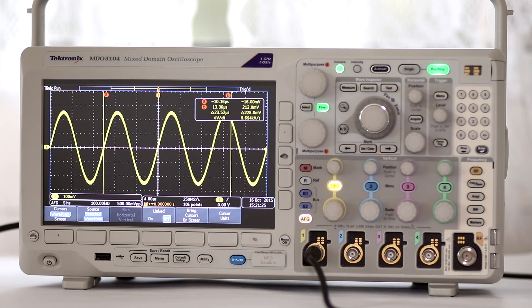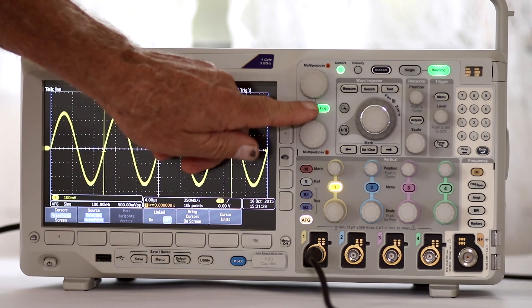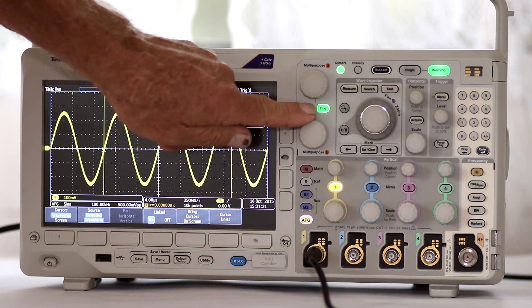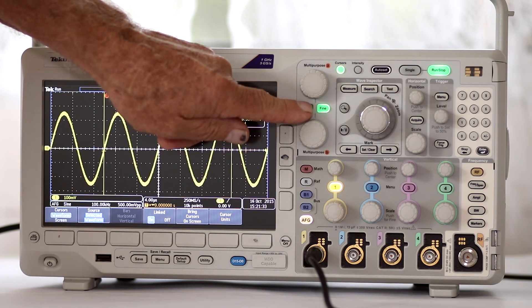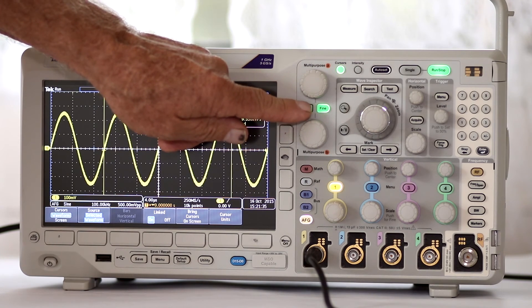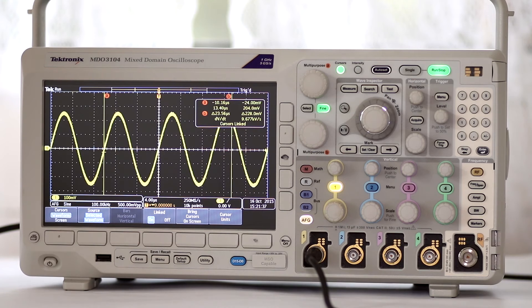If you press select, just under multipurpose knob A, it turns linking on and off. With linking on, multipurpose knob A moves both cursors together. Multipurpose knob B now regulates the distance between them. At the bottom of the cursor readout, the linkage status is indicated.